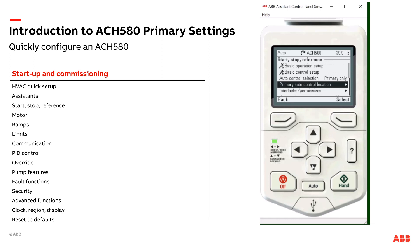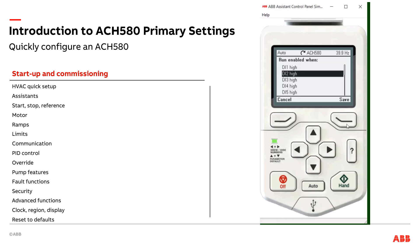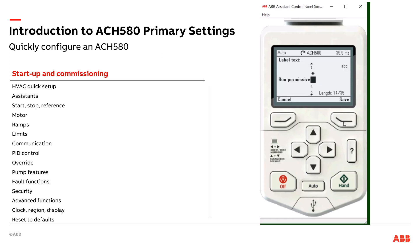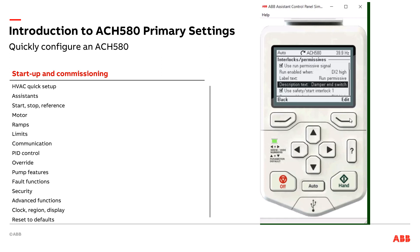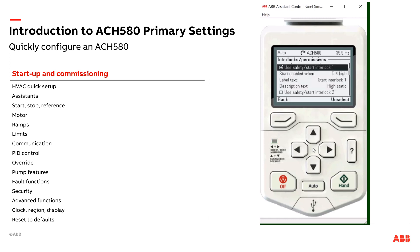Other than my auto control location, I've got interlocks and permissives. Do I have a run permissive signal? For example, if I have a damper end switch, that's what we'd consider a run permissive. I can check that box and assign it to a specific digital input — say it's allowed to run when digital input two is high. I can customize the text for that run permissive or use pre-canned text like 'damper end switch.' Whenever the drive can't run because the damper end switch isn't made yet the drive has a run command, it'll flash that alarm on the drive saying the damper end switch is not made.